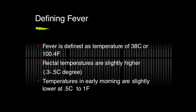Rectal temperatures are generally slightly higher and are also a much more accurate reflection of core body temperature. Temperatures in early morning tend to be slightly lower — maybe 1 degree Fahrenheit, 0.5 degrees Celsius. This is really important when you have a 4-week-old baby and you're going to decide to do a workup based on body temperature. So if they are 99.6 versus 100.4, take into consideration what time of day it is and whether that should impact your decision to do a workup.